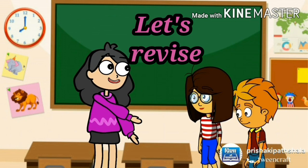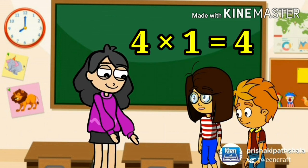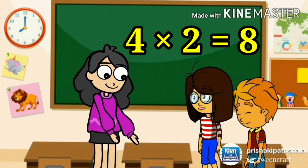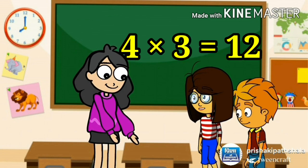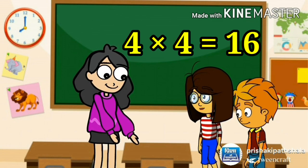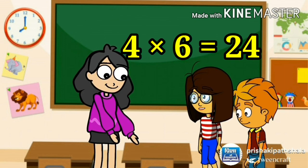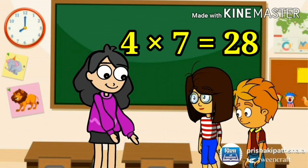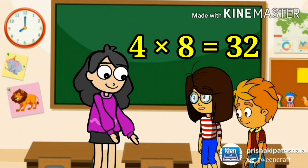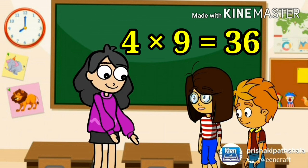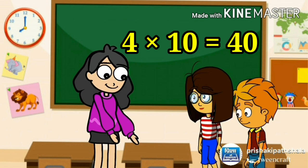Kids, let's revise. 4 1's are 4, 4 2's are 8, 4 3's are 12, 4 4's are 16, 4 5's are 20, 4 6's are 24, 4 7's are 28, 4 8's are 32, 4 9's are 36, 4 10's are 40.